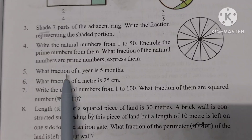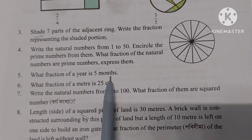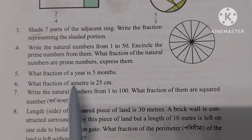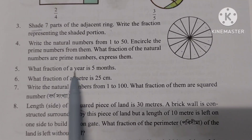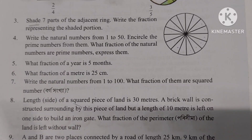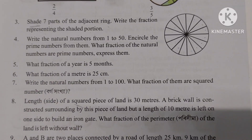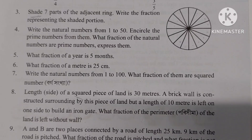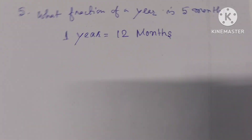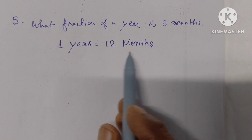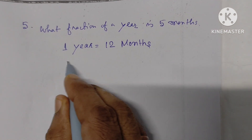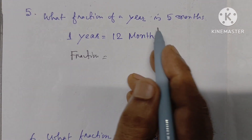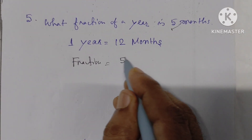Number 5: What fraction of a year is 5 months? 1 year equals 12 months. So the required fraction is 5 months out of 12 months, which is 5 by 12.